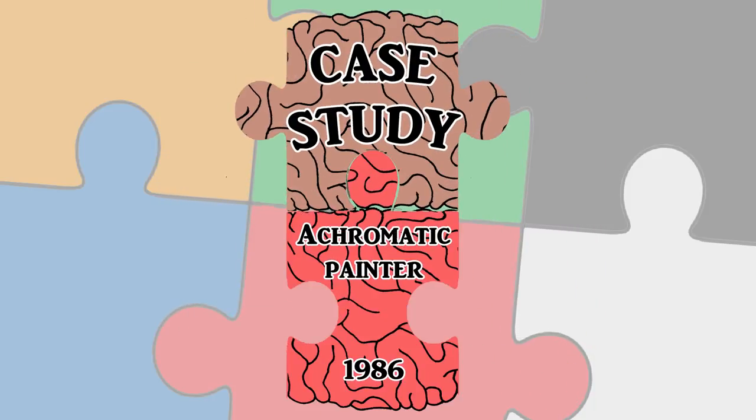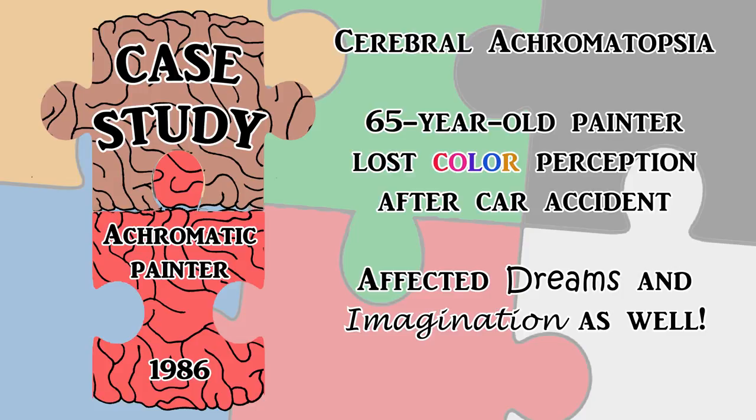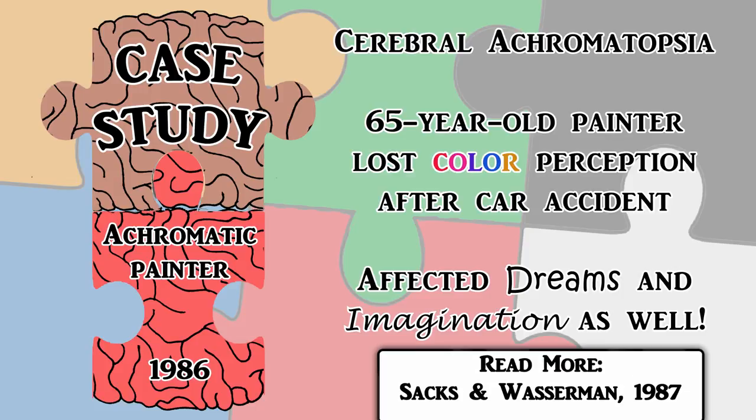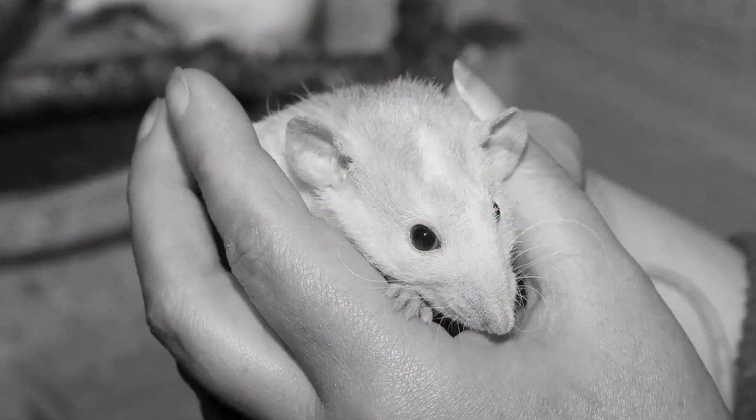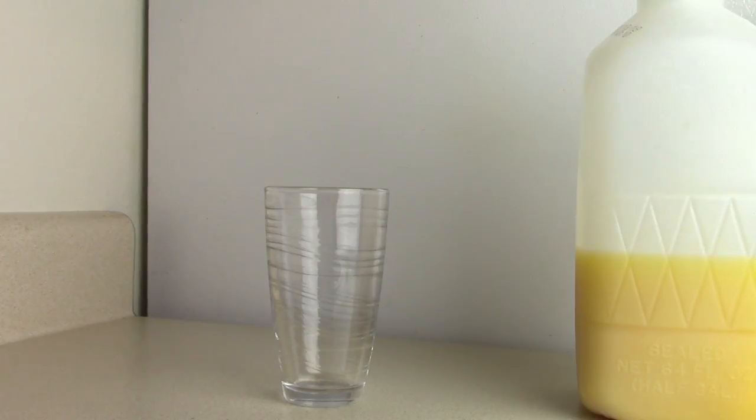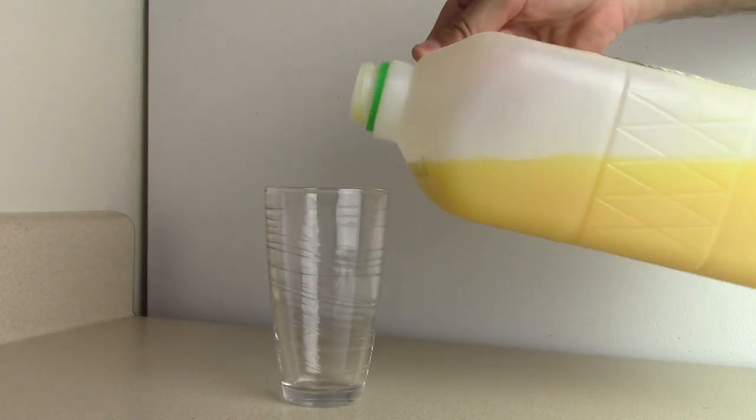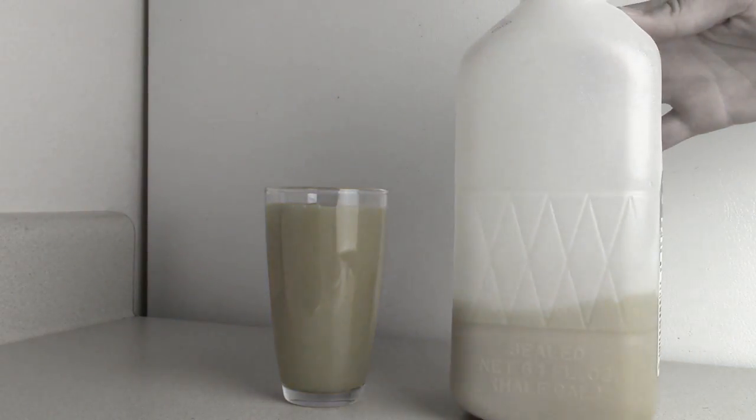The most famous case of cerebral achromatopsia occurred in 1986. A 65-year-old painter who was known for his vivid use of color in his artwork was in a car accident. Afterwards, he couldn't perceive or remember colors. He described the color of his wife's skin as rat-colored and was repulsed by it. He would often limit himself to eating foods that were normally black and white, such as coffee and yogurt, because food without color looked unappetizing.